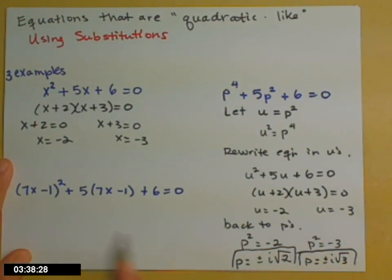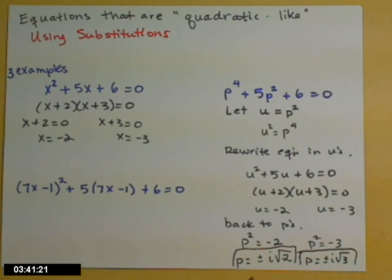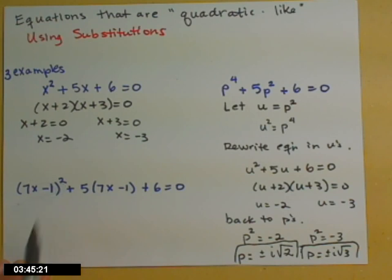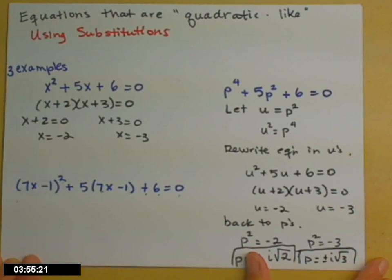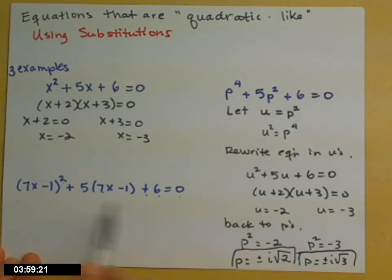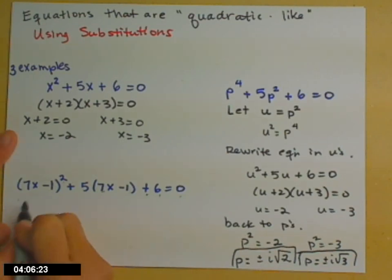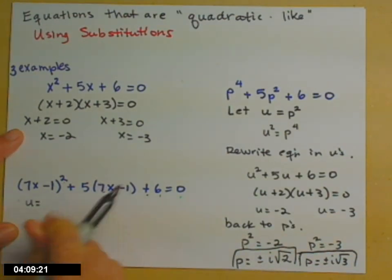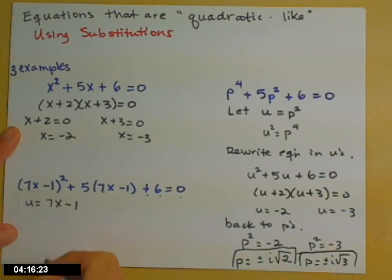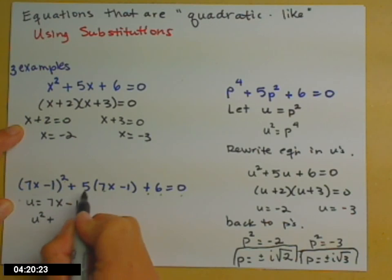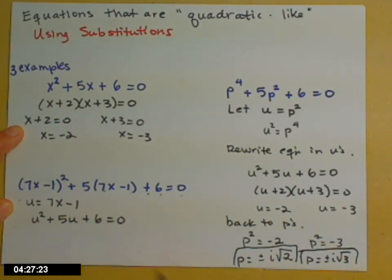The next example keeps the same coefficients but is a bit trickier. We have something squared plus 5 times that exact same something plus 6 equals 0. You could foil it out, distribute the 5, tidy up, and solve from there — but I promise I'll get there faster doing it my way. This time, u is going to be that bundle: u = 7x - 1. Rewriting the equation in u's gives u² + 5u + 6 = 0.